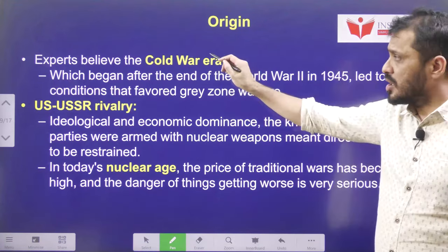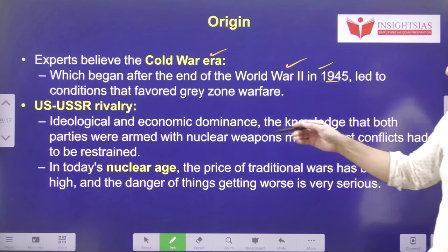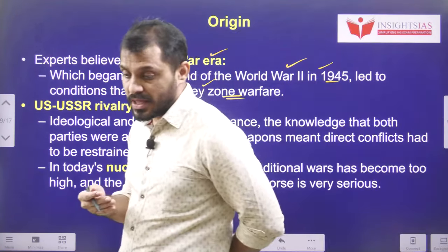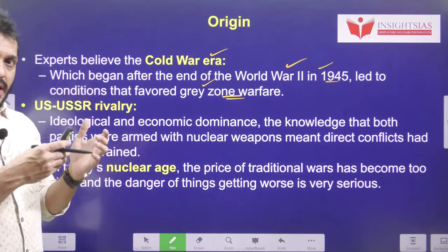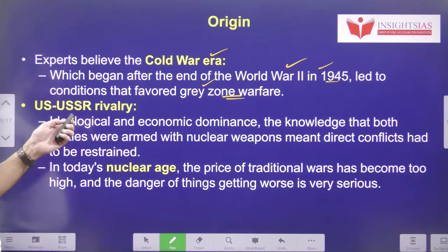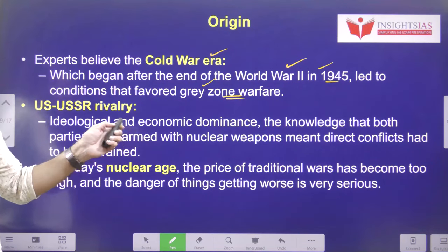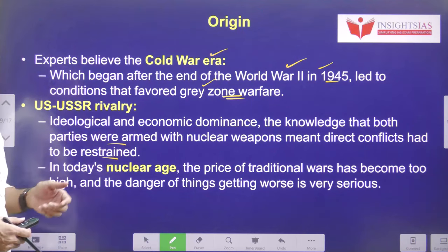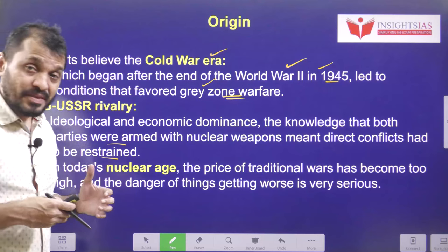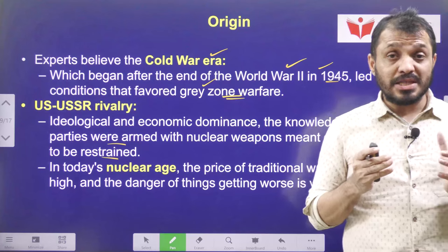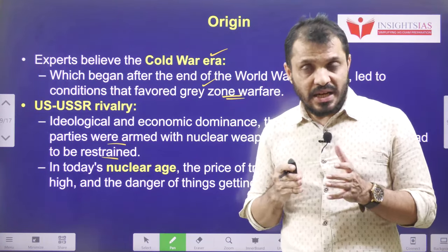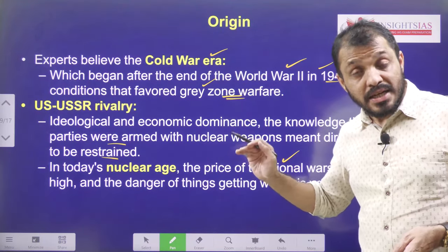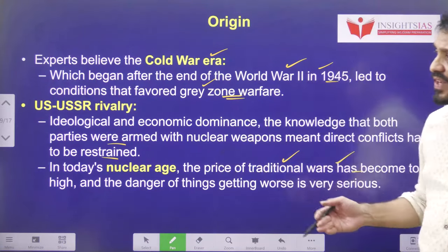This method got its origins in the Cold War era, which began at the end of World War II in 1945. The end of the Cold War led to conditions that favor gray zone warfare. The US-USSR rivalry involved ideological and economic dominance. The knowledge that both parties were armed with nuclear weapons meant direct conflict was restrained — it became ideological warfare, economic dominance, dominance in space, or spying operations. USA, UK, Canada, Australia, and New Zealand even established the Five Eyes alliance. In today's nuclear age, the price of traditional warfare is becoming very high, making indirect warfare always the better option.